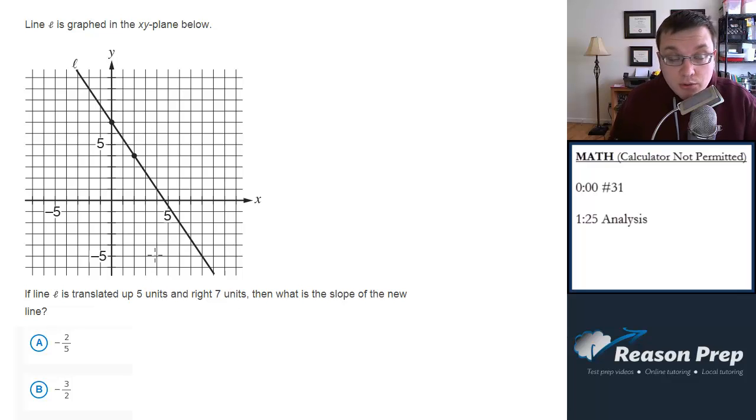Translating means moving, so we're going to move this line up 5 units. For example, this point will go to 1, 2, 3, 4, 5 here, and then to the right 7 units: 1, 2, 3, 4, 5, 6, 7. So here would be one point.